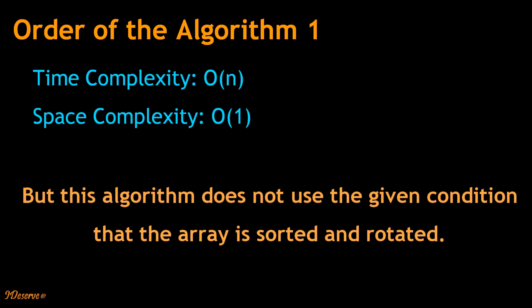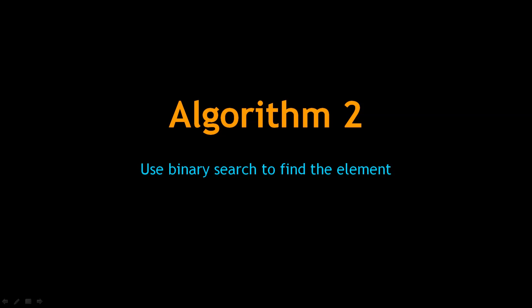This algorithm is not efficient as it does not use the given condition that the array is sorted and rotated. For an array with 1 million entries, in the worst case there would be 1 million comparisons, which is inefficient. We can make use of the sorted and rotated property of the array to reduce the number of comparisons. We will now look at an efficient algorithm that uses binary search and finds the element in O(log n) time.